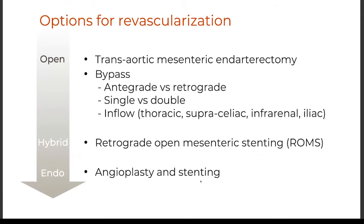Let's go through some of the options for revascularization. We have the classic transaortic mesenteric endarterectomy, bypass in various configurations — antegrade or retrograde, single or double — retrograde open mesenteric stenting (ROMS), which is a very neat technique with specific indications, and of course endovascular therapy with angioplasty and primary stenting.